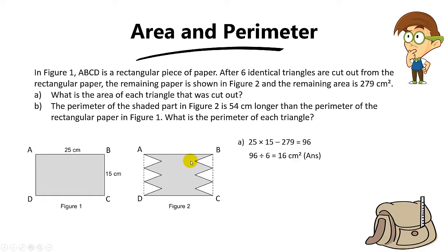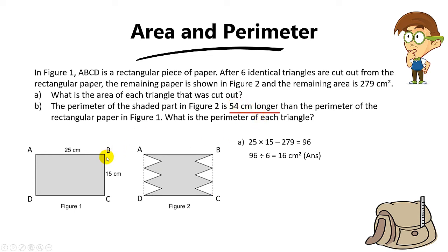For part B, the perimeter of the shaded part in figure 2 is 54cm longer than the perimeter of the rectangular piece of paper in figure 1. They want to find the perimeter of each triangle. If you notice, the 25 and 25 in figure 2 are the same as the 25 and 25 in figure 1. So essentially, the length of all the cut-out triangular regions is 54cm more than the length of these two sides.